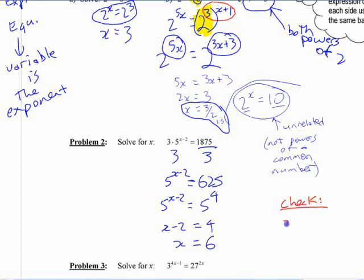Not that you need to write it down, but you could do 3 times 5, 6 minus 2. 3 times 5 to the 4. 4, 3 times 6, 25, 18, 75. So it works, right? You need to see that both sides are the same.